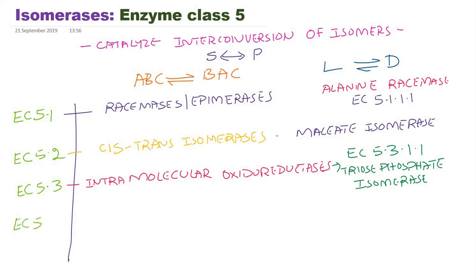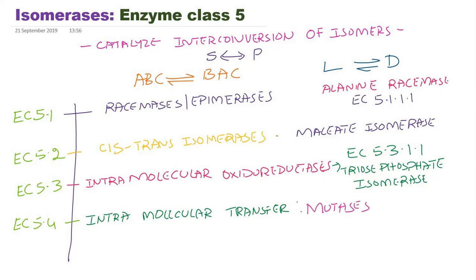The EC 5.4 series enzymes are those isomerases which carry out intramolecular transfer reactions. These enzymes are similar to class 2 transferases but they are not transferases, because here within the substrate there is a transfer of a functional group from one part of that particular substrate to the other part. There is only one substrate and one product. These are commonly known as mutases, and an example is phosphoglucomutase.